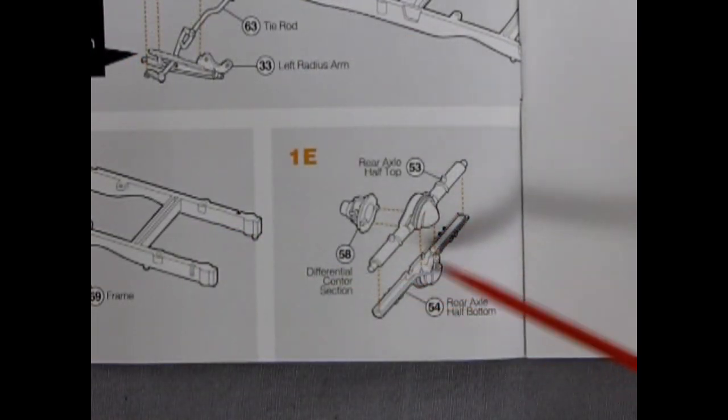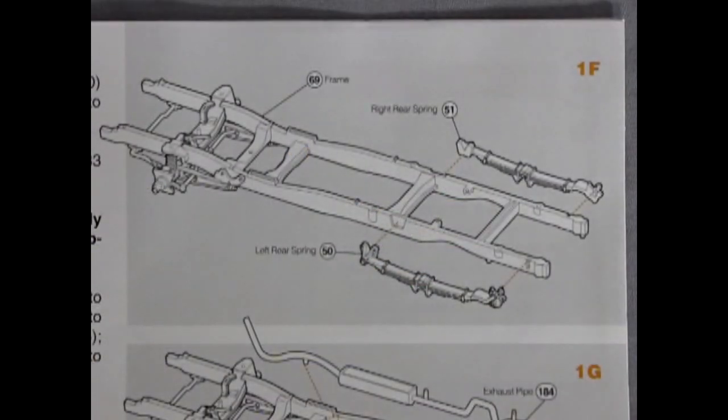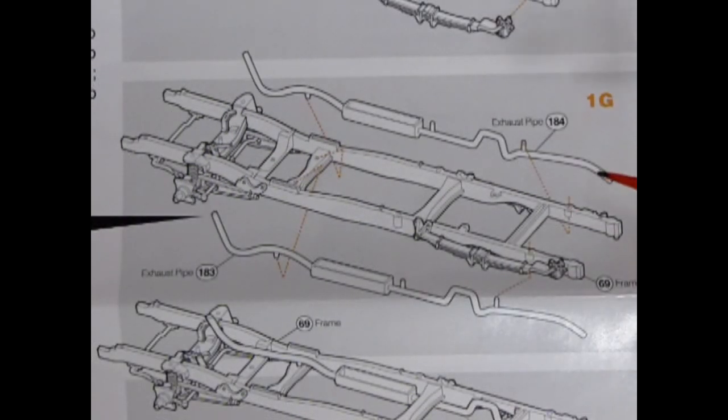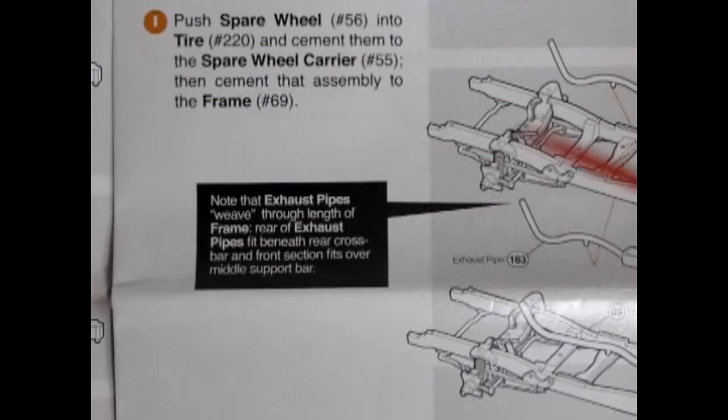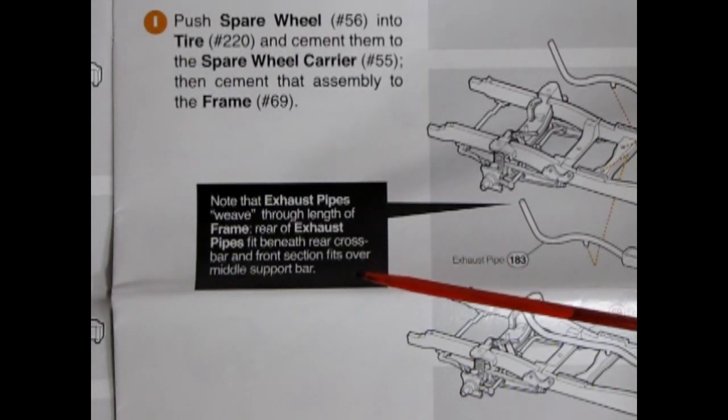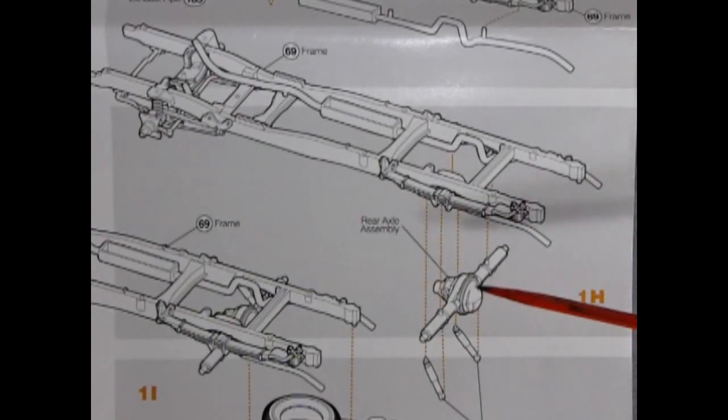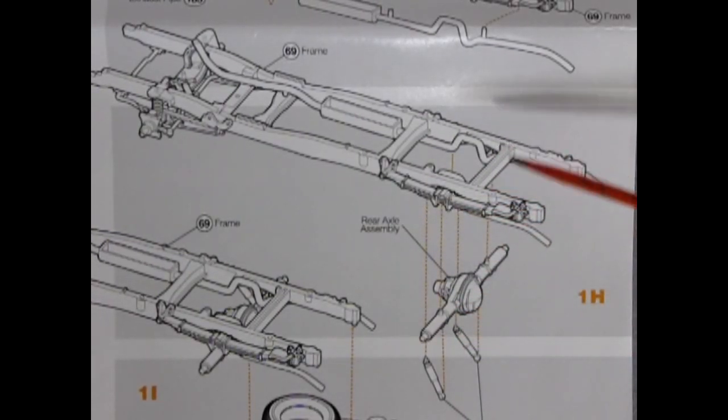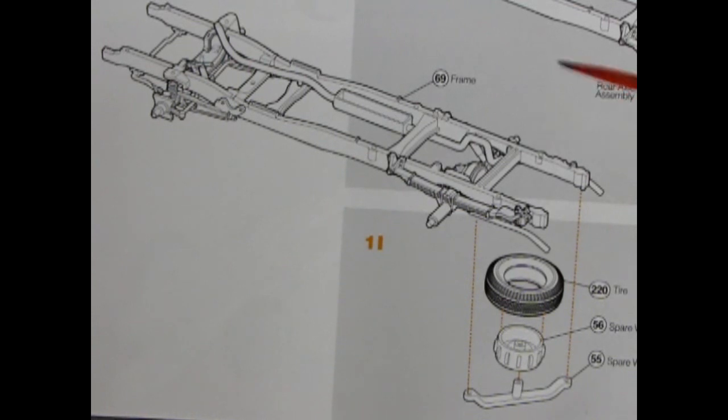Panel 1D shows our sway bar and our links gluing up underneath onto our frame. While panel 1E shows our three-piece differential all gluing together. In panel 1F we start to glue the rear springs onto our frame. Panel 1G shows our exhaust pipes going up into the frame. Note that exhaust pipes weave through length of frame. Panel 1H shows our rear axle assembly gluing up onto our springs followed by the rear shock absorbers. And panel 1I is really reminiscent of the 53 Ford pickup truck from AMT because you have the tire, the spare wheel, and the spare wheel carrier gluing up underneath on our frame.